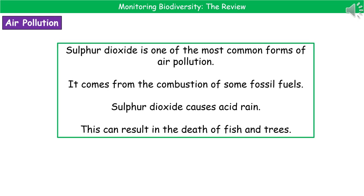The first kind of pollution we encounter is air pollution. One of the main causes is sulfur dioxide, which comes from the combustion of certain fossil fuels that contain sulfur compounds. When that sulfur dioxide goes up into the atmosphere, it dissolves in clouds to form acid rain, and when that acid rain falls it can result in the death of both fish and trees.